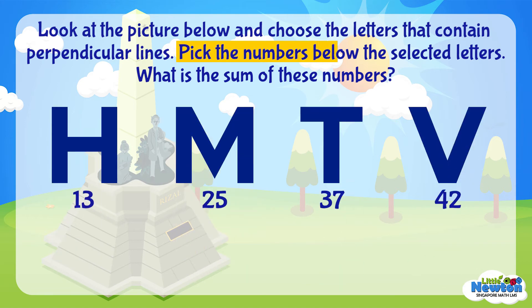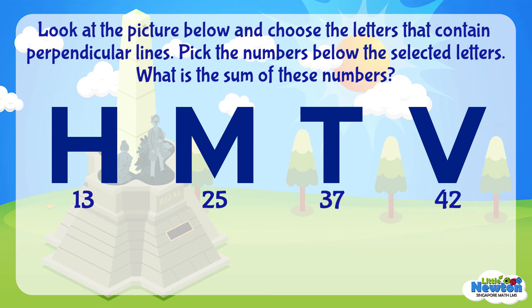Pick the numbers below the selected letters. Once we have chosen the letters that contain perpendicular lines, we will have to pay close attention to the numbers found below those letters. What is the sum of these numbers? With those numbers, the question asks us to add them up to find the sum. Now that we've understood the question, let's move on to solve this word problem.